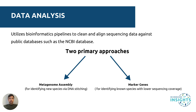Once sequencing is complete, the next big challenge is data analysis. The vast amount of data generated requires a structured approach depending on your research question and needs. Metagenome assembly stitches together overlapping sequences to reconstruct genomes of mostly unknown species, and is particularly useful for discovering new microorganisms or comparing microbial strains at high resolution. The other approach is database comparison: comparing sequencing data against public databases to identify species present in the sample, even at low abundance, using marker genes. There are multiple bioinformatic analysis approaches that could be applied depending on how you want to analyze and interpret your microbiome data.